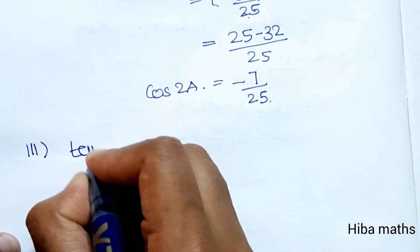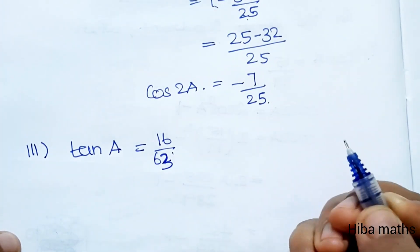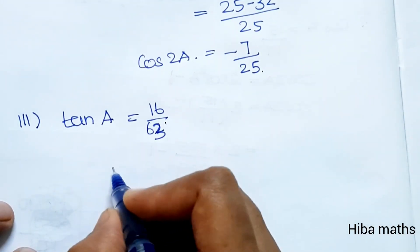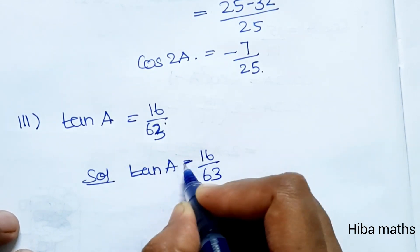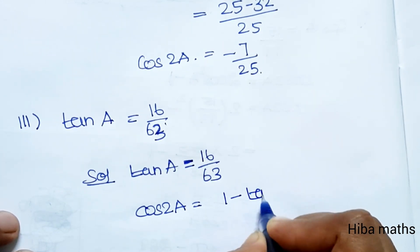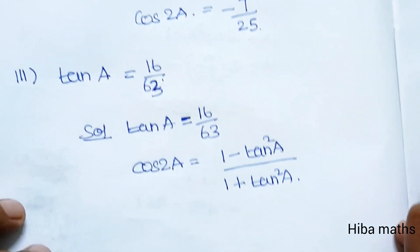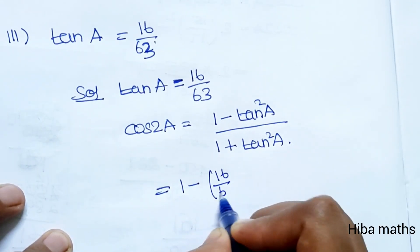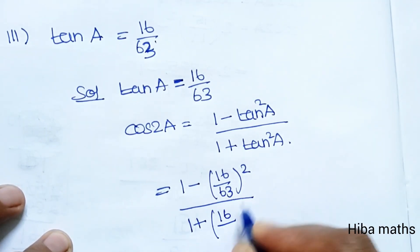Third subdivision: tan A is equal to 16 by 63. Find cos 2A. The formula for cos 2A in terms of tan A is: cos 2A = (1 − tan²A) / (1 + tan²A).